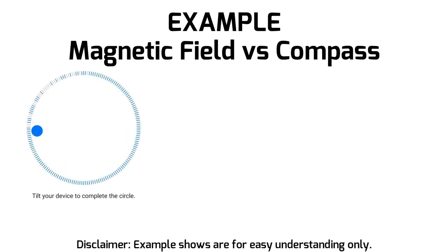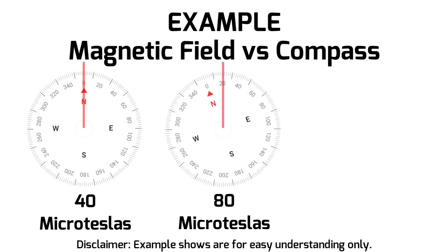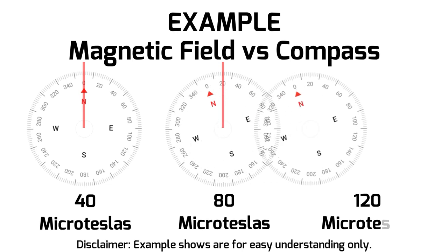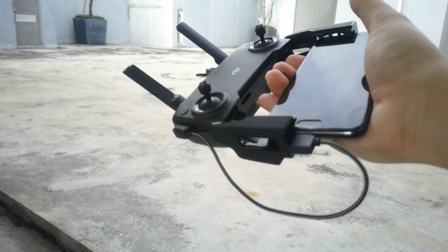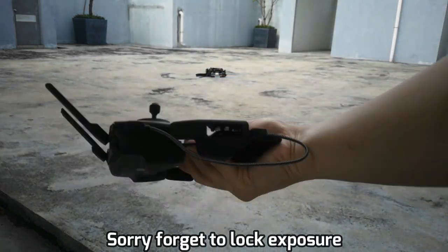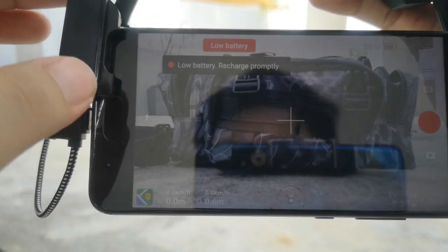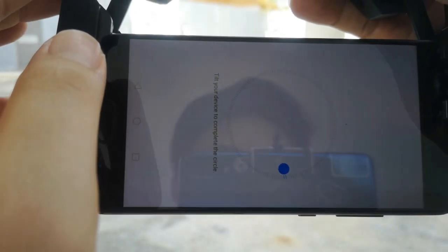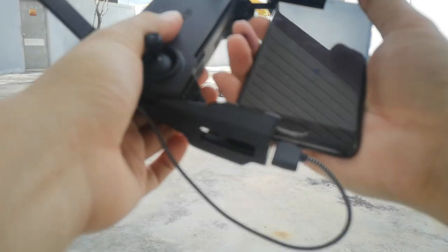For example: you stand still and calibrate your phone compass at a magnetic field value of 40 microteslas — it shows North. You take a step forward; the compass reacts to 80 microteslas and causes a 20-degree offset to northeast — still fine. Another step forward at 120 microteslas causes another 20-degree offset, and now the compass is showing close to east-northeast. To fix this, you can hold your remote control with the phone already mounted and perform the motion used to calibrate your phone compass — without needing to open the compass app — or open the compass app and do the calibration there.